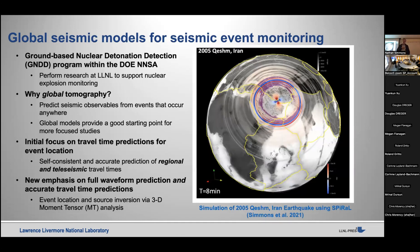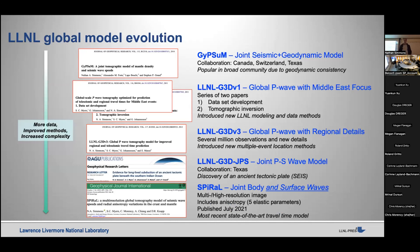The question I often get is: why global tomography? We're interested in studying particular regions that might have events of interest, so why go global? It's because we want to predict observables from seismic events that occur anywhere, and we also want to create a good starting point for more refined studies in areas that may be coming of interest.